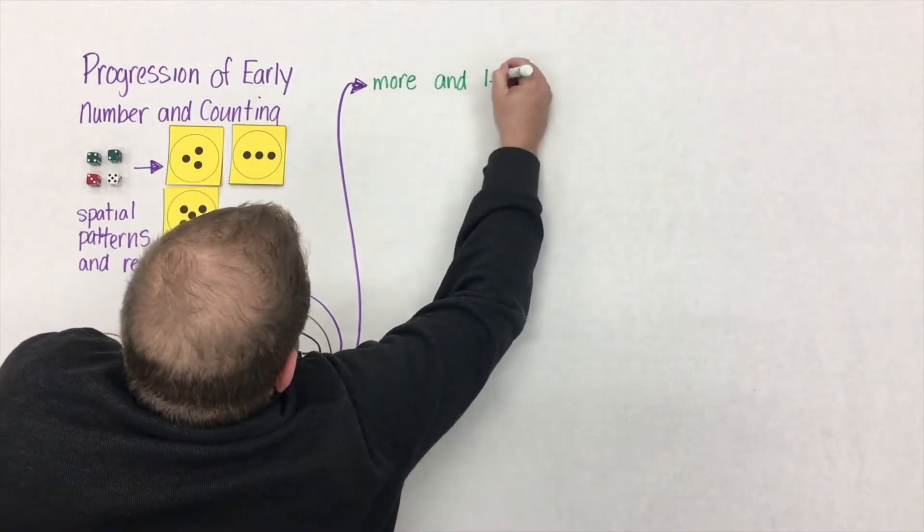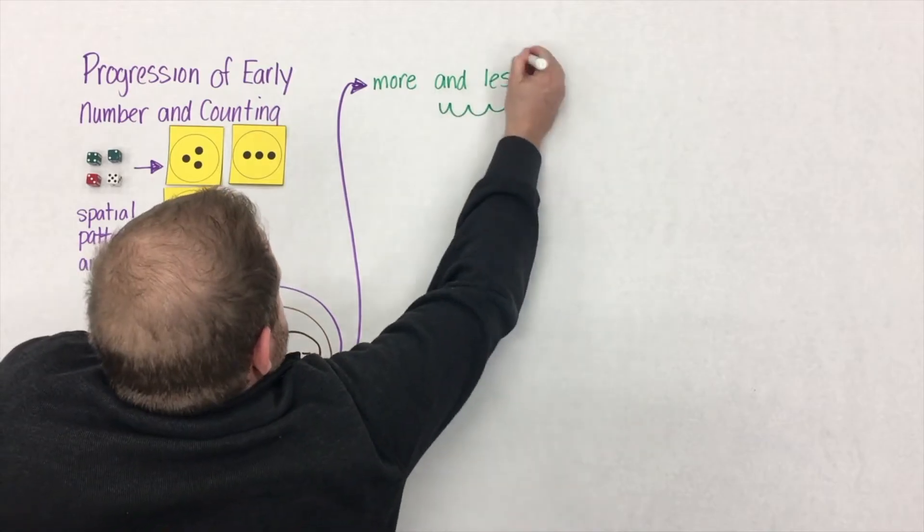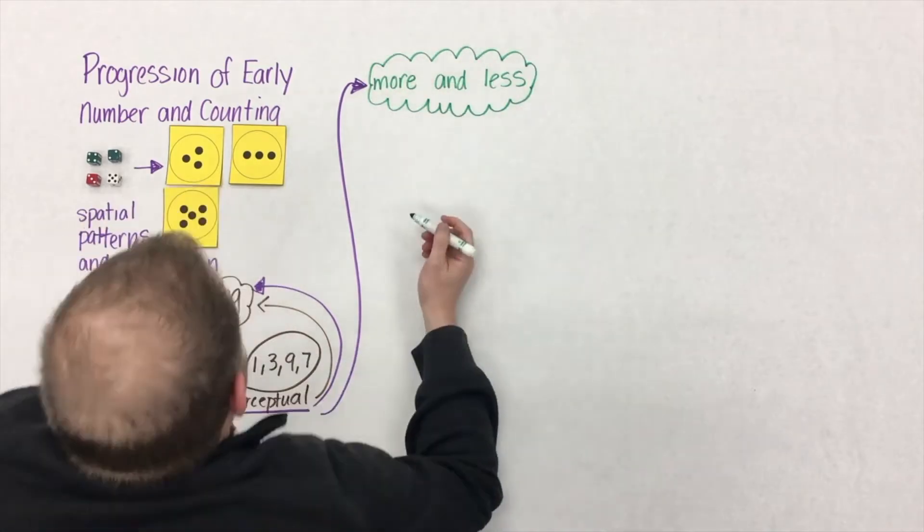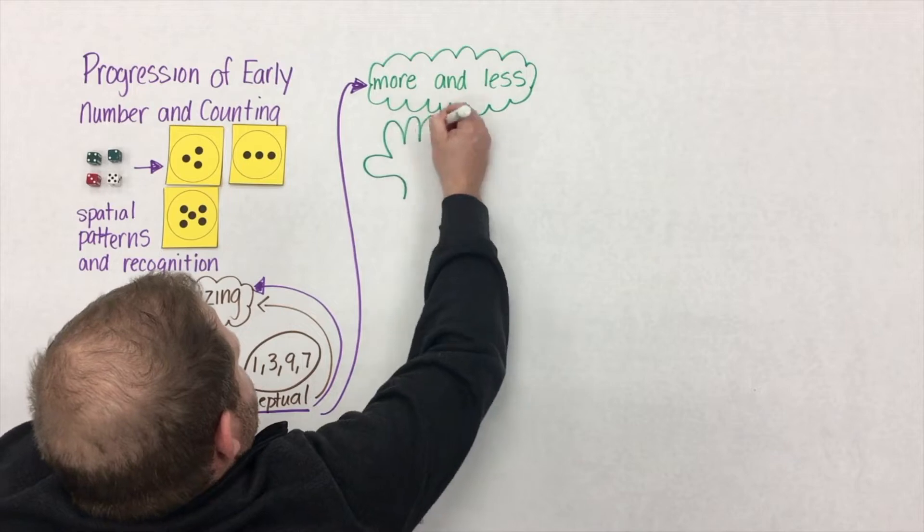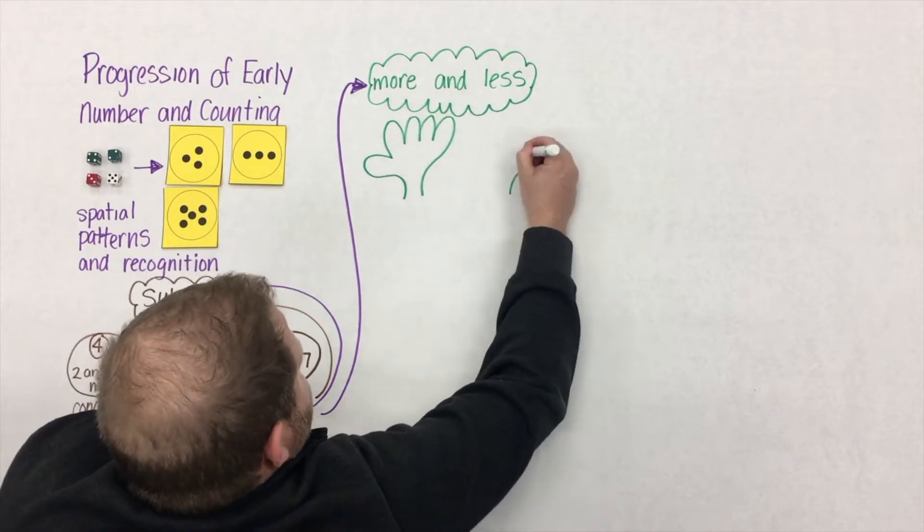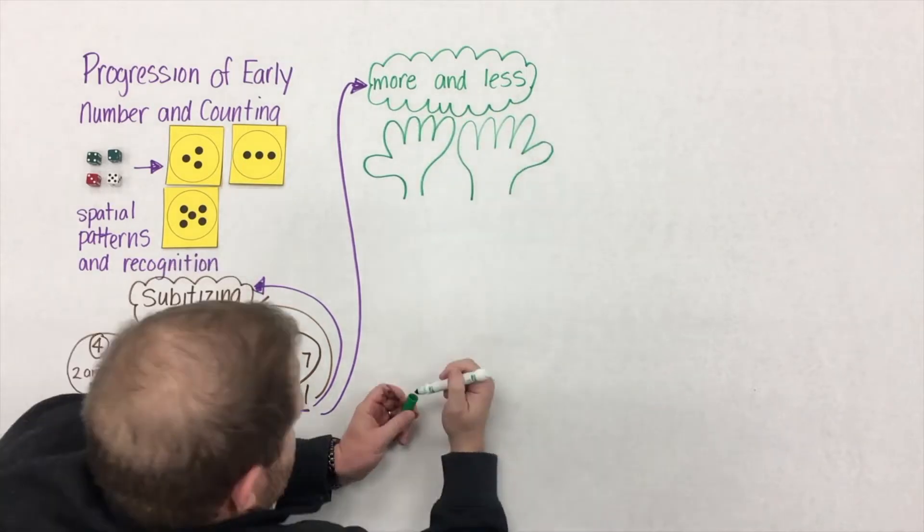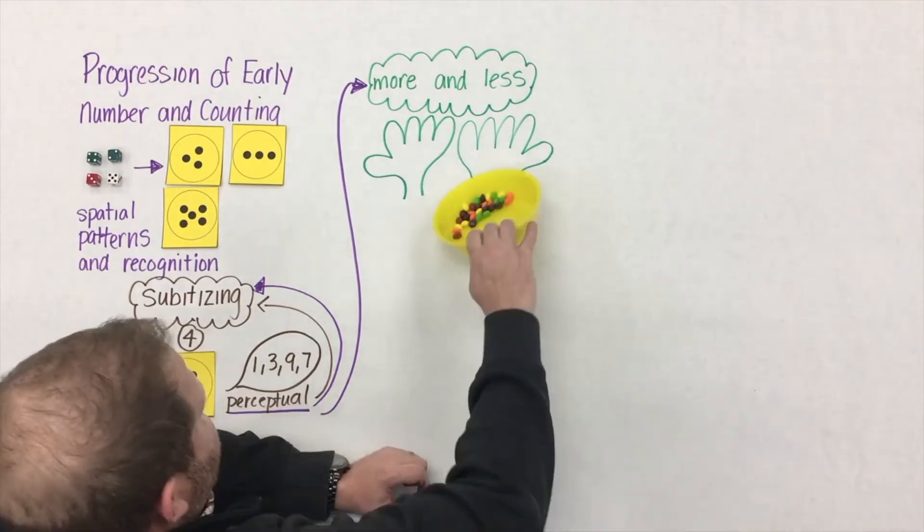So as students are working on this idea of subitizing, they're simultaneously building their understanding of more and less. Let's take these two hands, for example. If we were to put some candy in each hand,